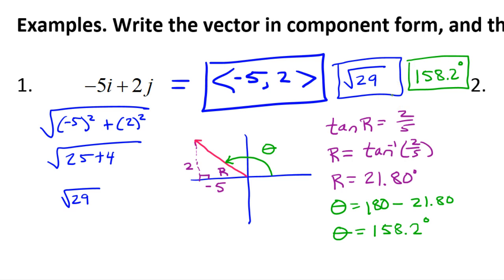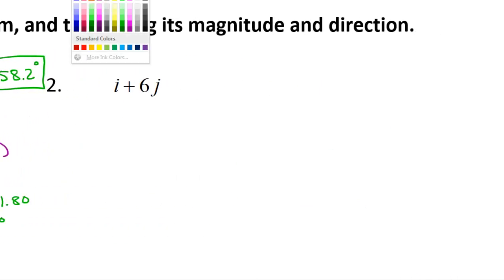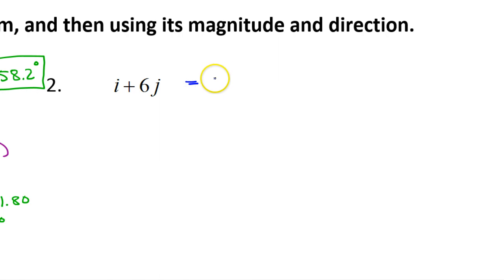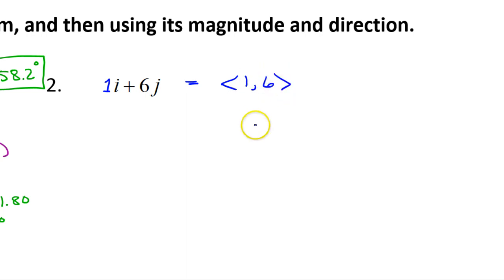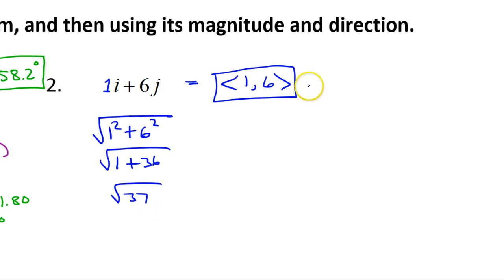So those are the three things we found for problem 1: component form, magnitude, and direction. For problem 2, this is 1i + 6j, so in component form we have (1, 6). The magnitude is the square root of 1² + 6² = the square root of 1 + 36 = the square root of 37.